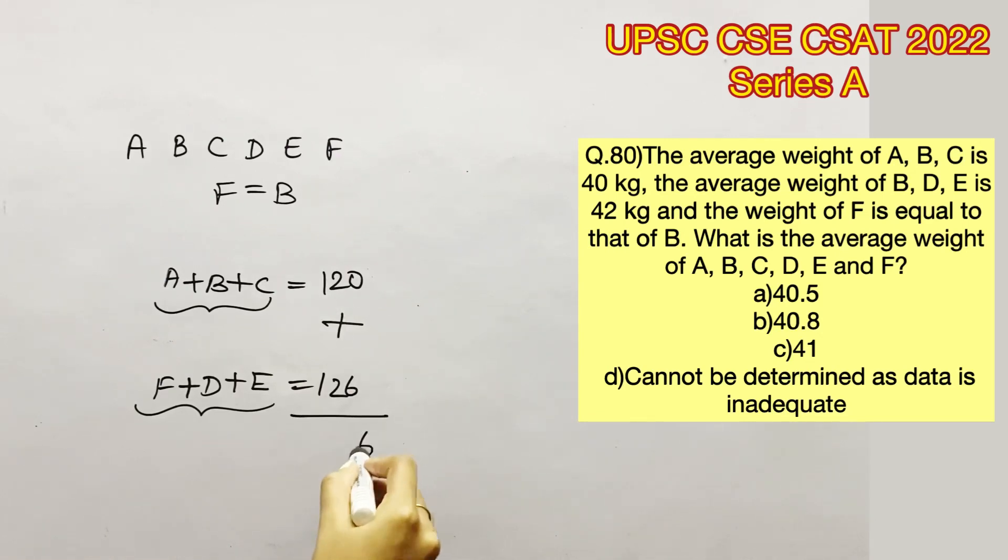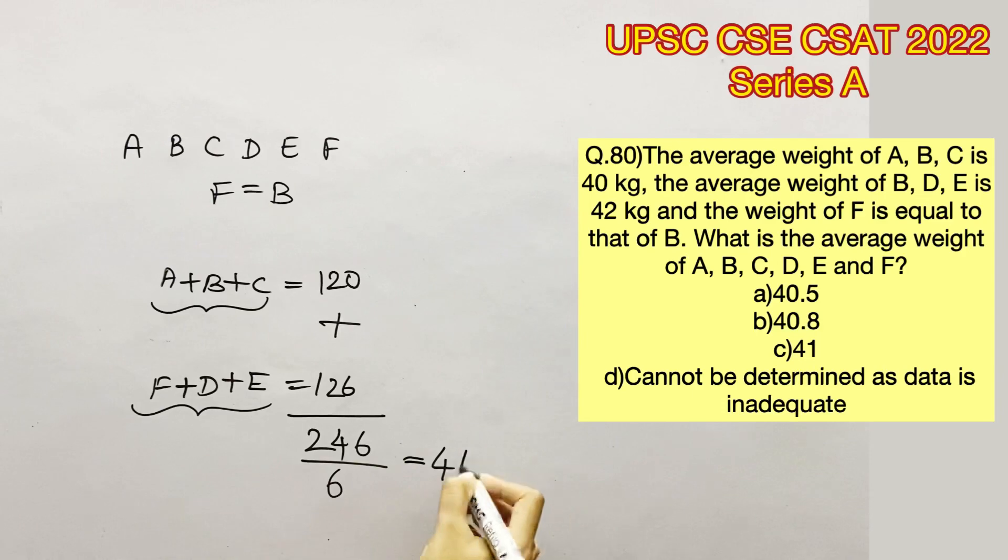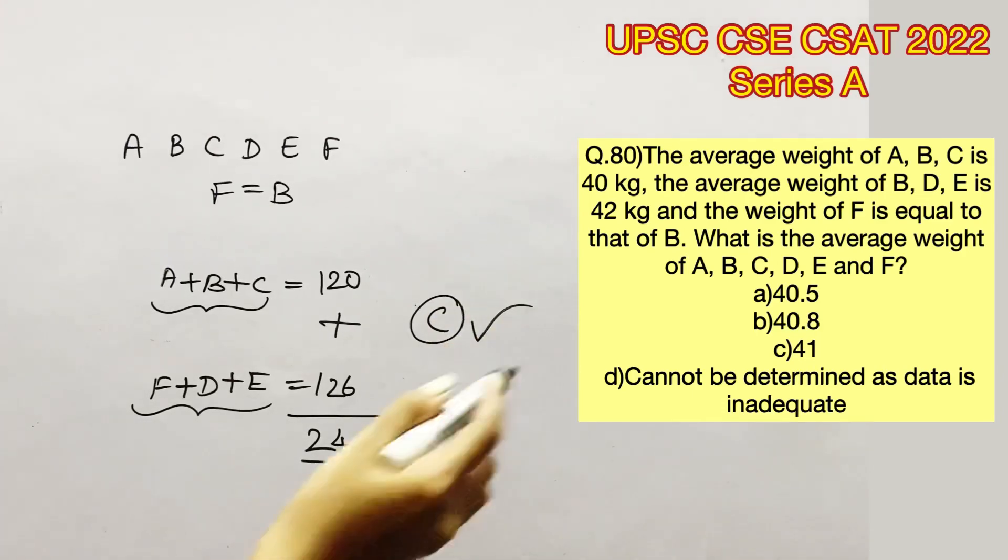120 plus 126 gives us 246. Now we have the total sum of all the 6 values. We know that to find the average, the total sum should be divided by the number of values. In our case it's 6. So 246 divided by 6 will give us 41. So option C is the right answer.